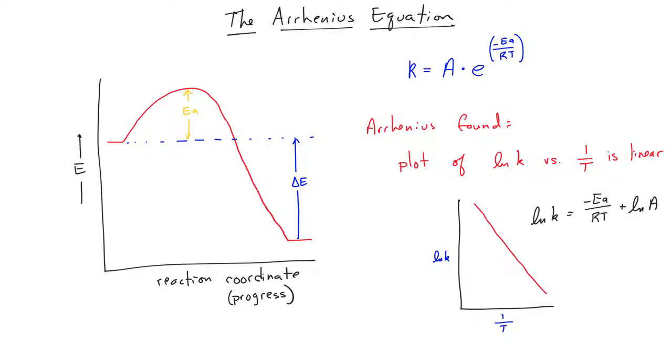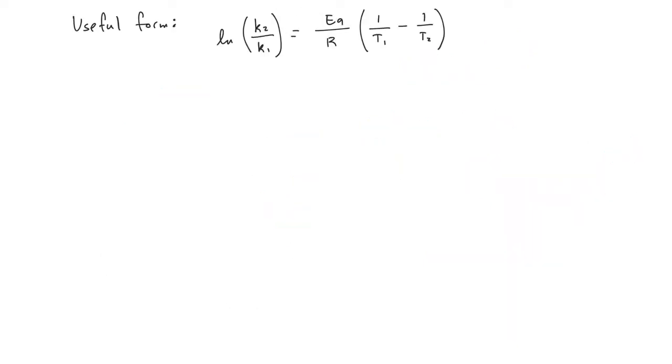Using the Arrhenius equation, we can calculate the energy of activation, that is, the amount of energy that is required for a reaction to occur. One of the useful forms of this equation is shown here. Using this form, it is possible to determine the energy of activation by simply measuring the rate constants at two different temperatures. You may recall that this equation looks very similar to the Clausius-Clapeyron equation.